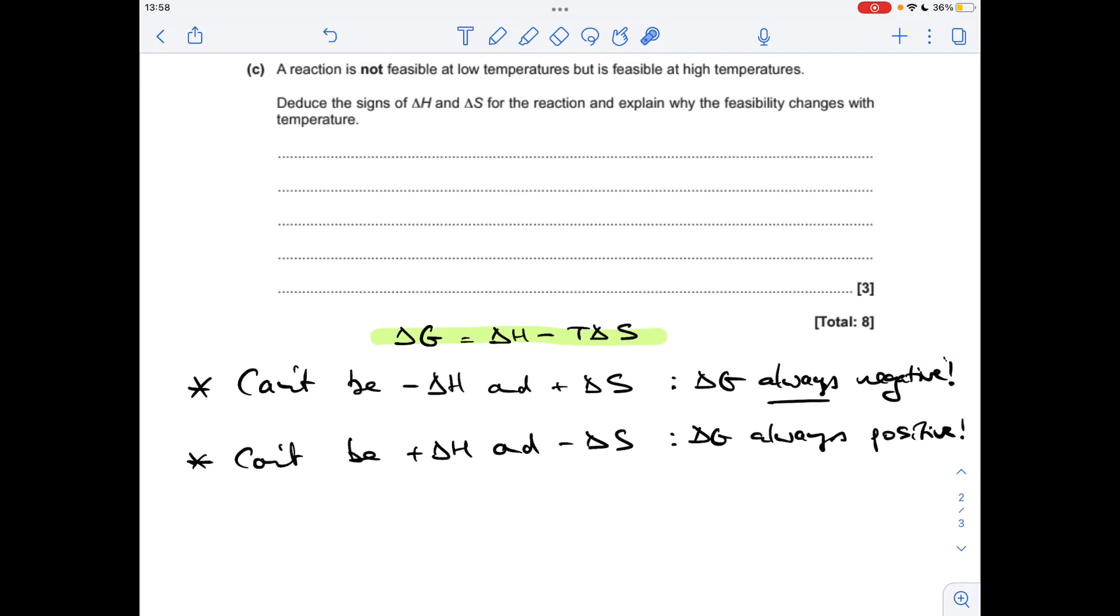So you'll notice I've written down two scenarios that it can't be. So I'm ruling these out straight away. So it can't be exothermic, negative delta H, with a large entropy change, a positive entropy change. And the reason for that is, if that's negative, that's going to stay negative, if that's positive. So you combine a negative and a negative, delta G is always going to be negative. So that would be feasible always.